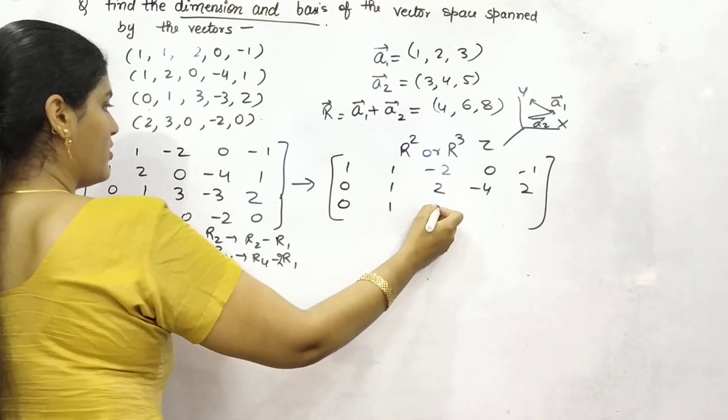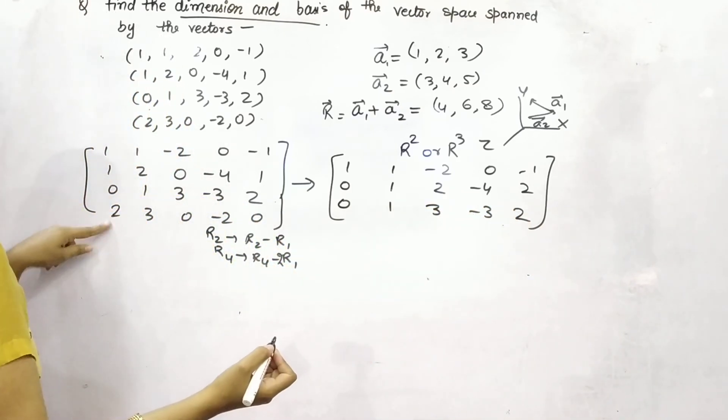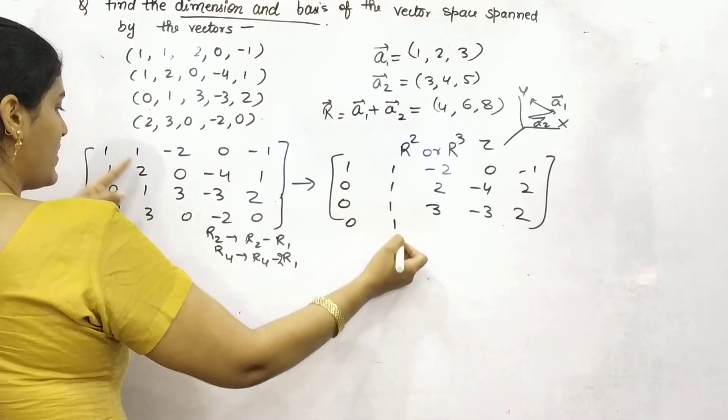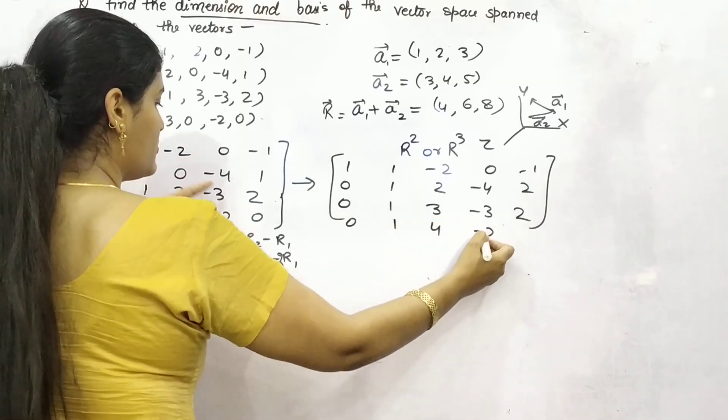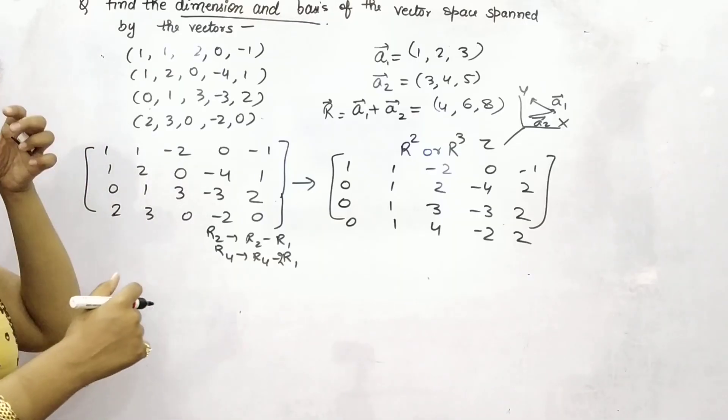Thereafter, this is the same because we have already got 0 here. And R4 minus 2R1, so 2 minus 2 is 0, 3 minus 2 is 1, minus, minus plus 4, minus 2, and plus 2.